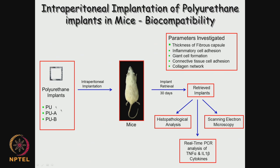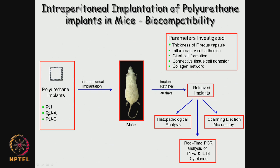Here is an example where we looked at polyurethane - polyurethane is widely used in stents, breast implants, and in many places in tubes. We have 2 different modifications done to polyurethane, and they are placed intraperitoneally for 30 days and then we retrieve the implant. We look at histopathological studies and we can also look at fibrous encapsulation around the polymer, whether any collagen has been formed, what changes are happening to the connective tissues - the tissue response.